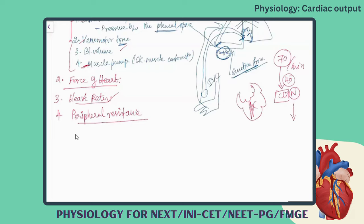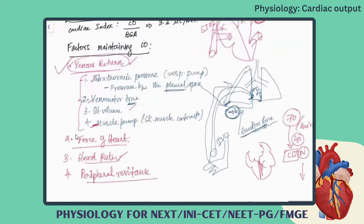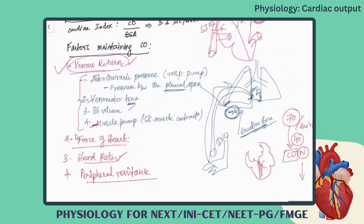This is how the factors maintain the cardiac output. We have four important factors: the first one is venous return, the second one is force of heart, the third one is heart rate, and finally, peripheral resistance.